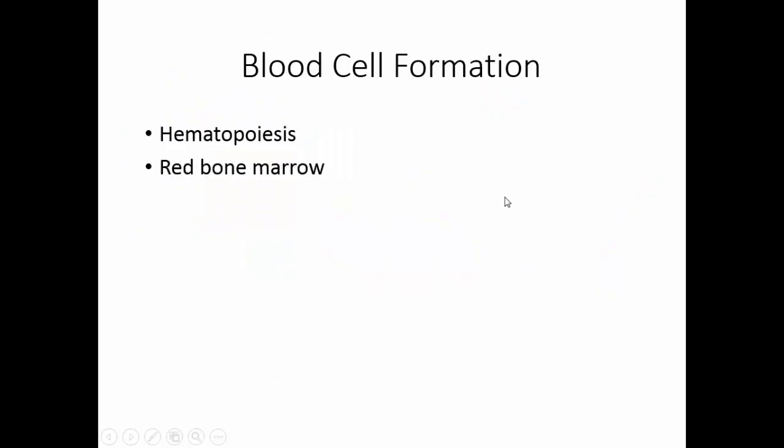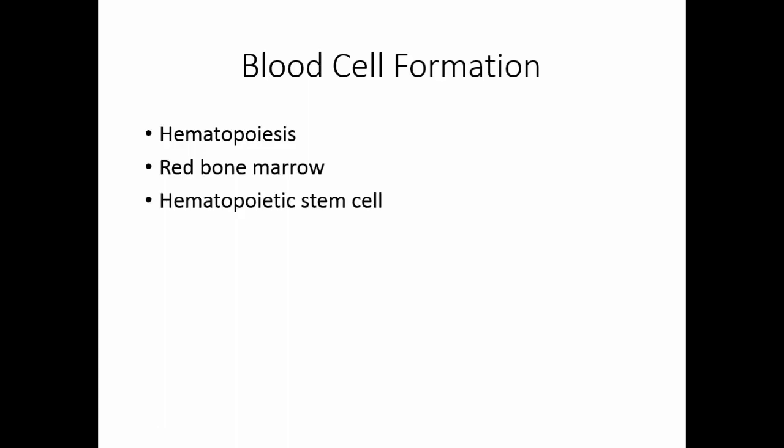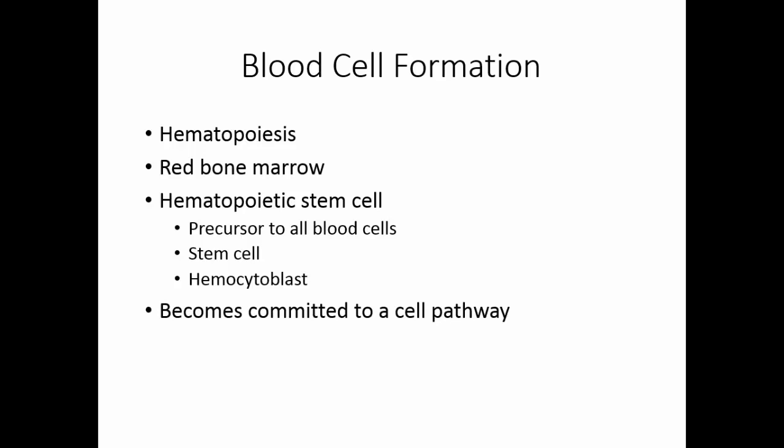Blood cell formation is known as hematopoiesis, and this occurs in the red bone marrow. The hematopoietic stem cell is the precursor to all blood cells — it is a true stem cell, considered the grandmother of all blood cells, known as a hemocytoblast. When the hemocytoblast divides, the daughter cells become committed to a particular blood cell pathway — they are the mother cells for all blood cells, but once committed, they will become that particular cell.